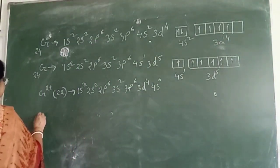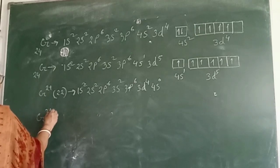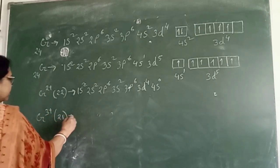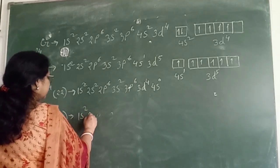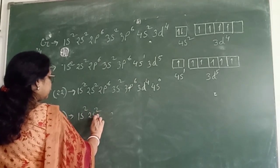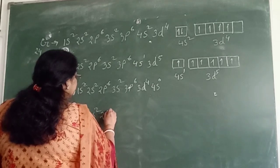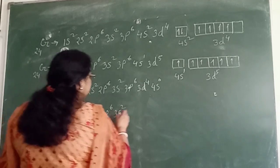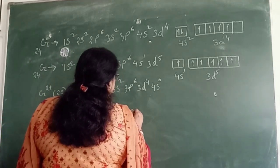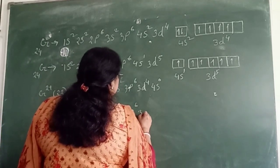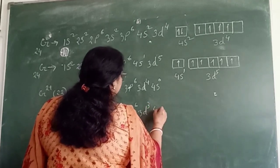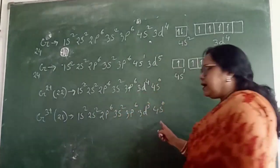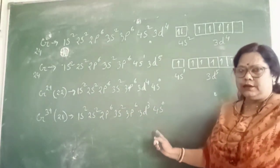In case of CR3 plus ions, there are 21 electrons. The configuration is: 1s2, 2s2, 2p6, 3s2, 3p6, 3d3, 4s0. Here 3 electrons are being removed.